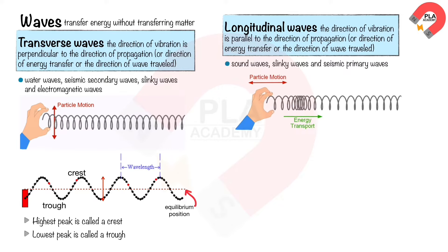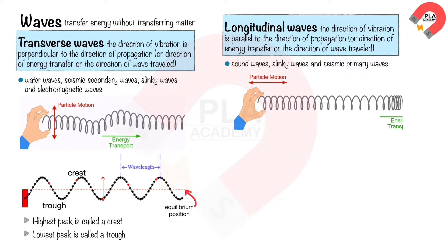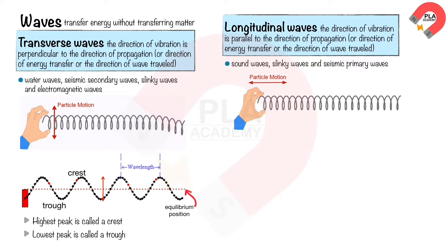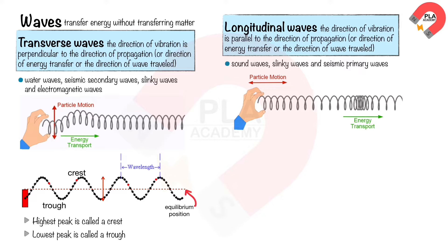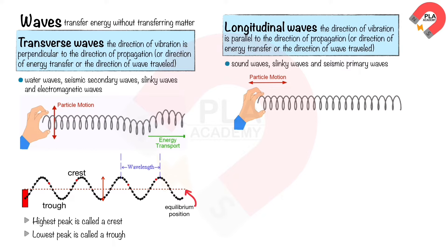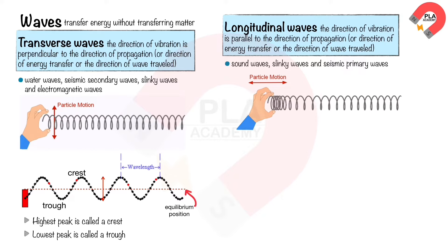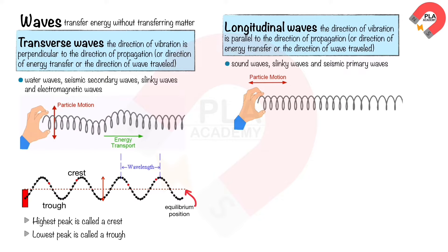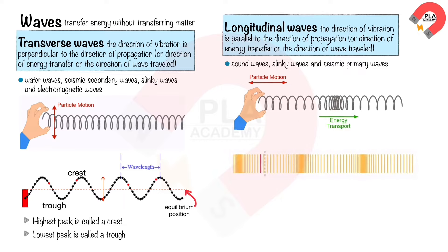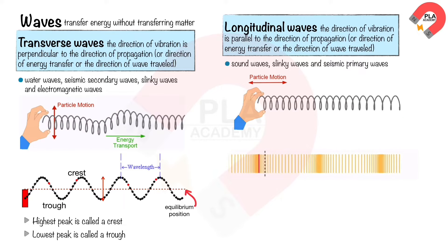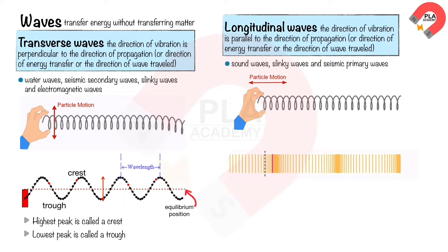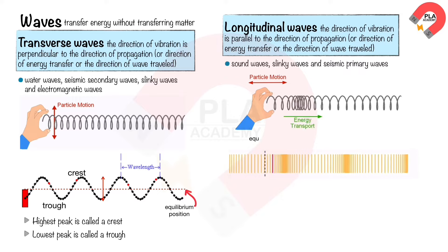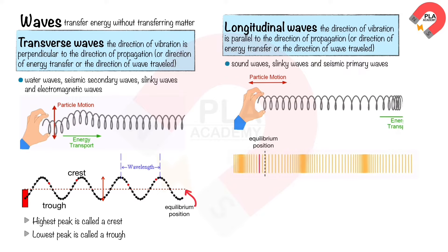We can demonstrate a longitudinal wave by shaking the spring forward and backward, as shown. The direction of vibration is forward and backward, which is parallel to the direction of wave propagation, or direction of energy transfer, or direction of wave travel, which is to the right. The direction of vibration is forward and backward around the equilibrium position. This is the equilibrium position.